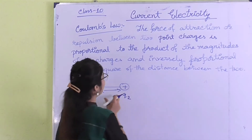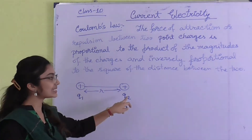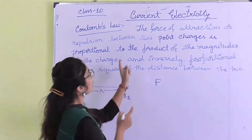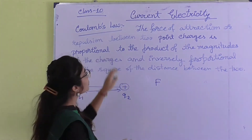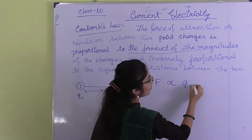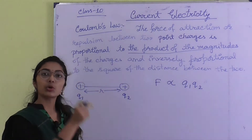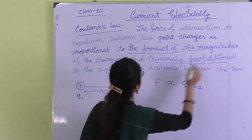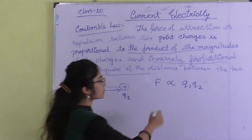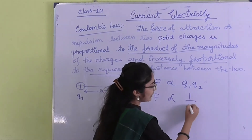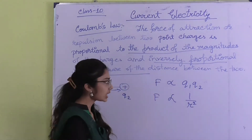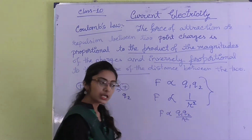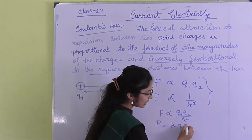The repulsive force F between charges Q1 and Q2 at distance r: F varies as Q1·Q2 (product of two charges), and F varies as 1/r² (inversely proportional to square of distance). Combining both: F varies as Q1·Q2 / r². So F = K × Q1·Q2 / r², where K is the electrostatic force constant. In vacuum, K equals 1 / (4πε₀), giving F = (1 / 4πε₀) × Q1·Q2 / r². This is the mathematical form of Coulomb's law.